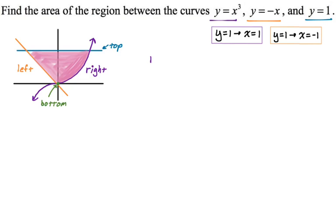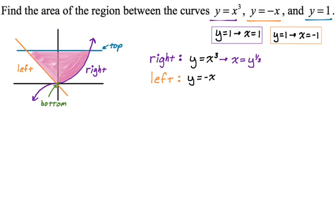The right-hand curve is y equals x cubed, and solving for x gives x equals y to the one-third. The left curve is y equals negative x, which gives x equals negative y. The lower bound is zero, because the y-coordinate of the origin is zero, and the upper bound is one.